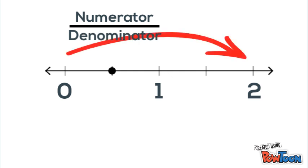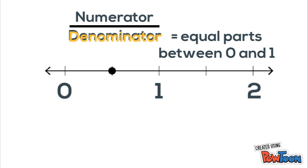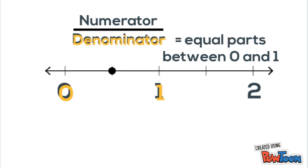Here we have a number line from 0 to 2 with a dot representing a fraction. The important thing is to not get tricked and to remember that the denominator is always the equal parts or gaps between 0 and 1. So we count the gaps between 0 and 1 and we see that there are 2 gaps. That means our denominator is 2.